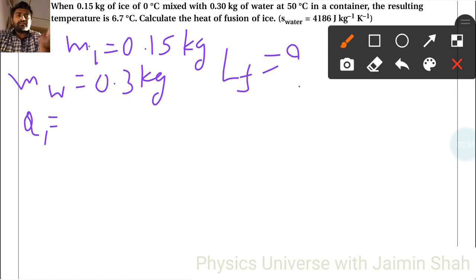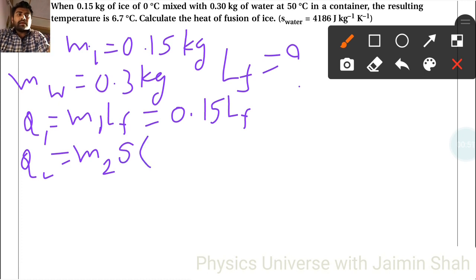q1 equals mi times Lf for ice, so mi is 0.15 times Lf. Then q2 equals the formula m times s, so here the mass is mw. So mw is 50 minus 6.7, which is 0.3 into s. s is 4186 into 50 minus 6.7.